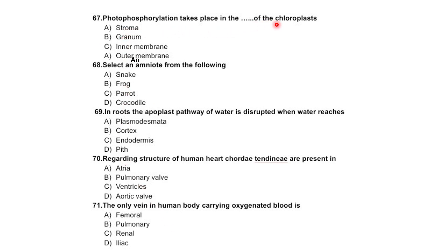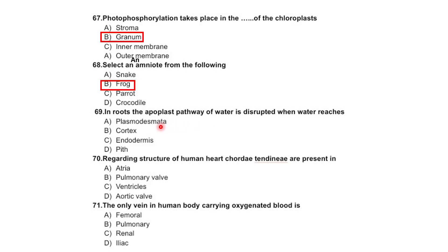Photophosphorylation takes place in the granum of the chloroplast — stroma, granum, inner membrane, or outer membrane — correct option is granum. Select an amniote from the following: snake, frog, parrot, or crocodile — frog is an amphibian, not an amniote.